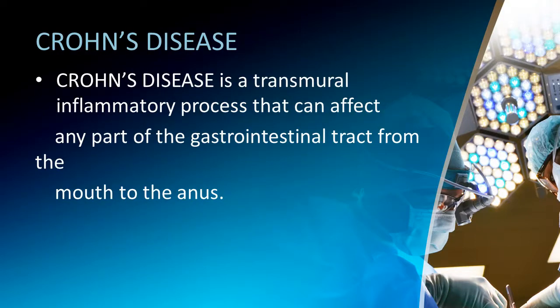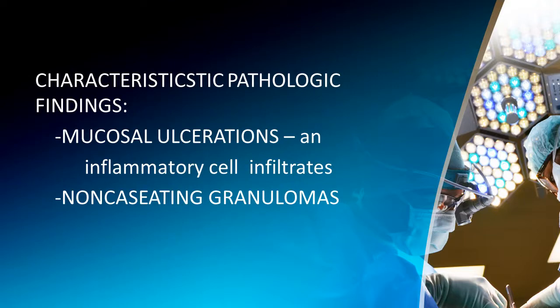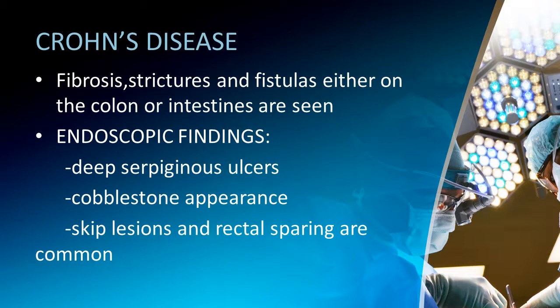Crohn's disease is a transmural inflammatory process that can affect any part of the gastrointestinal tract from the mouth to the anus. Characteristic pathologic findings include mucosal ulcerations, inflammatory cell infiltrates, and non-caseating granulomas. Fibrosis, strictures, and fistulas are seen. Endoscopic findings include deep serpiginous ulcers, cobblestone appearance, skip lesions, and rectal sparing.